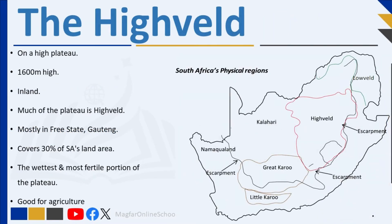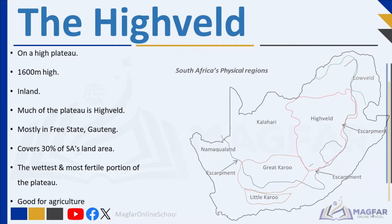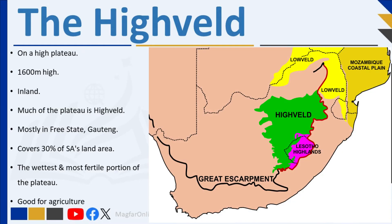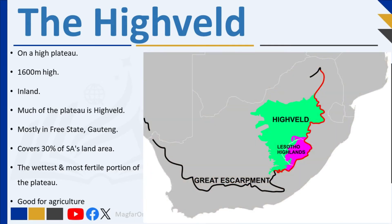The Highveld is located on a high plateau inland of South Africa, over 1,600 meters high. It is found mostly in the Free State, Gauteng, Mpumalanga, and the eastern part of the north-west province. Johannesburg, the largest city in South Africa, is found there. The Highveld covers about 30% of South Africa's land area and is the wettest and most fertile portion of the plateau, occupying the central eastern portion. It is generally between 1,500 and 2,100 meters above sea level, highest on the edge of the escarpment to the east on the Drakensberg, and sloping downwards to the south and west.